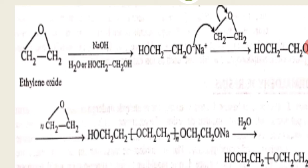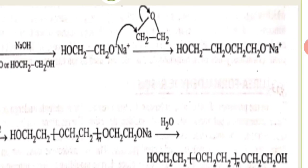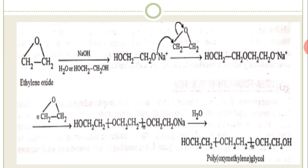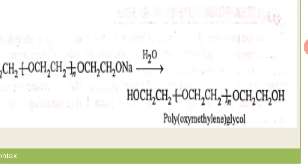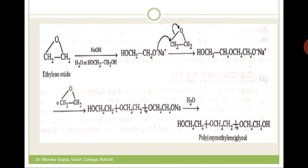In the reaction, the glycol changes to its sodium salt in basic medium, which acts on the epoxide. First a unit forms, then epoxide is added repeatedly until the polymer polyoxyethylene glycol is formed. You stop the chain when you have the desired number of carbon atoms in the polymer.